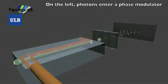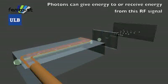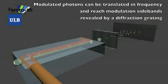On the left, photons enter a phase modulator. Photons interact with a classical radiofrequency signal. They can give energy to or receive energy from this RF signal. Modulated photons can be translated in frequency and reach modulation sidebands revealed by a diffraction grating in the middle.